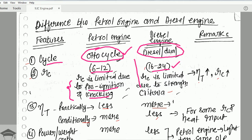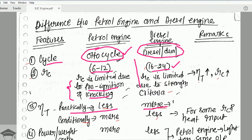The next difference is thermal efficiency. Thermal efficiency is less for the Otto cycle and more for the diesel cycle — meaning less for a petrol engine and more for a diesel engine. I have compared the Otto cycle, diesel cycle, and dual cycle in much more detail in a separate video, which you can access by clicking the top right corner icon appearing on your screen right now.